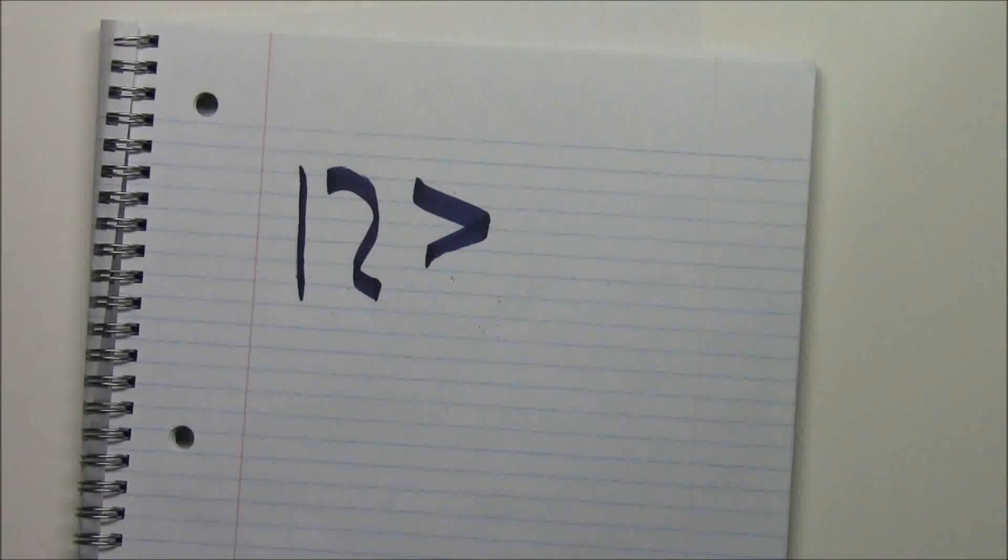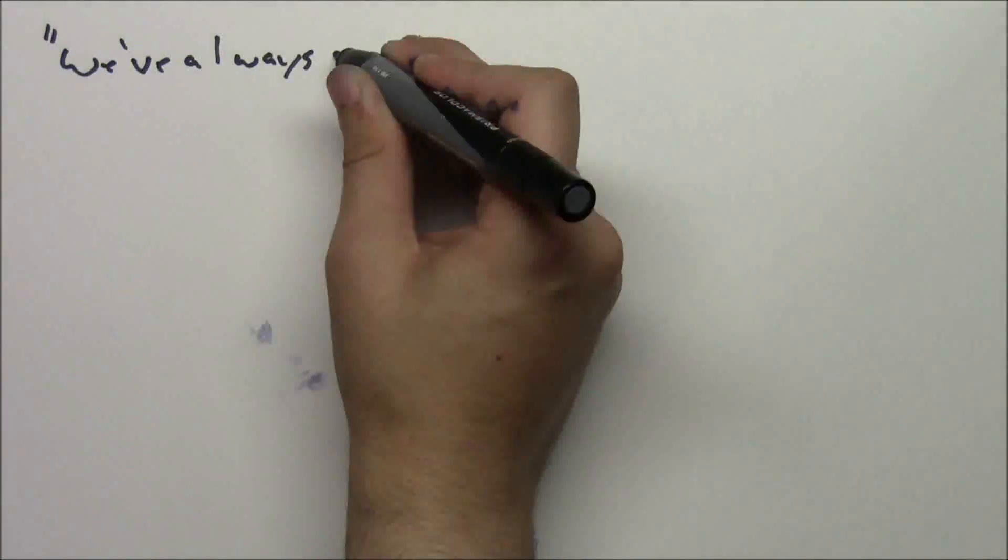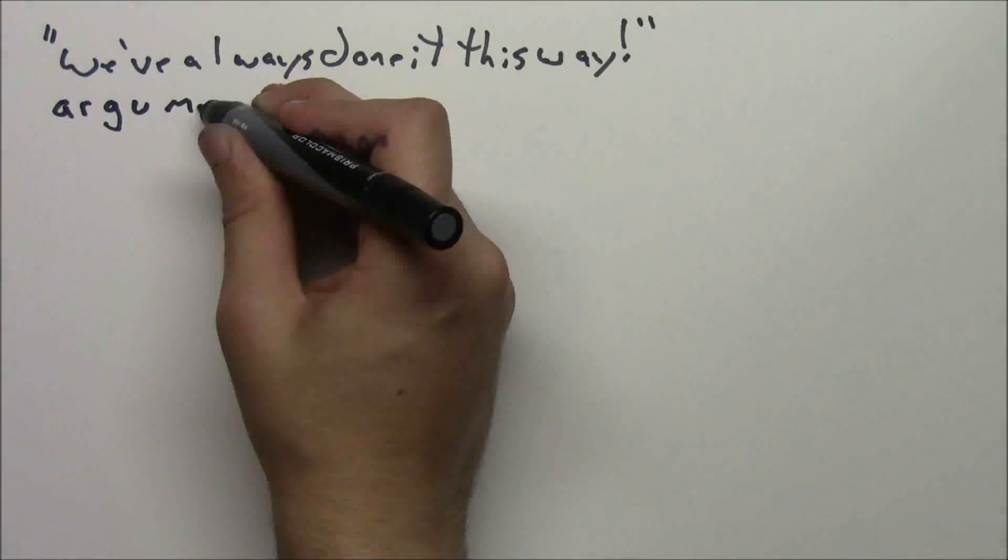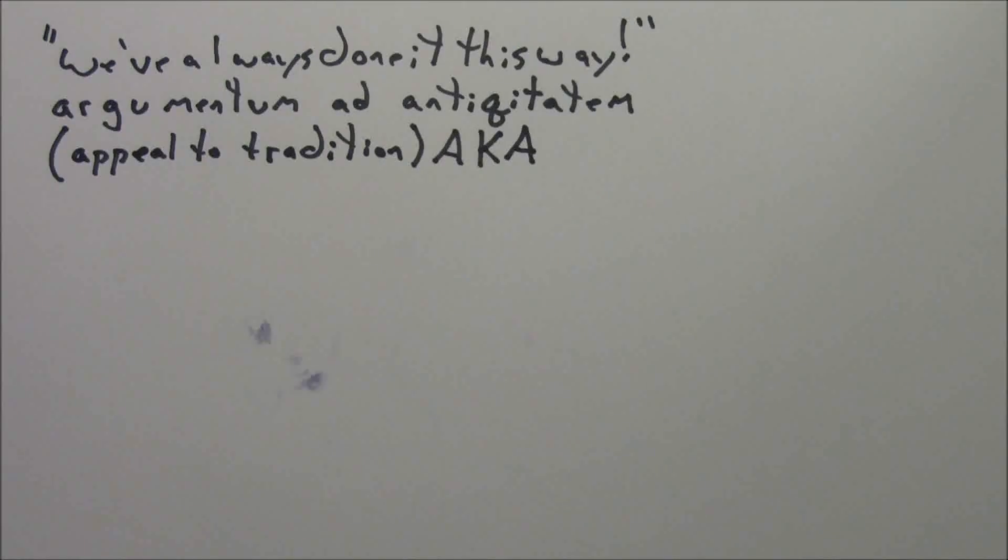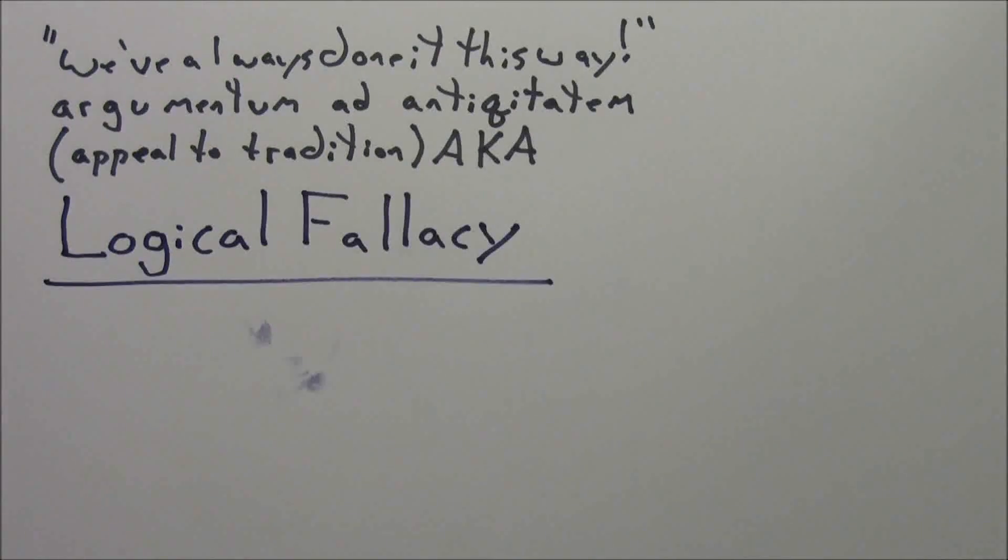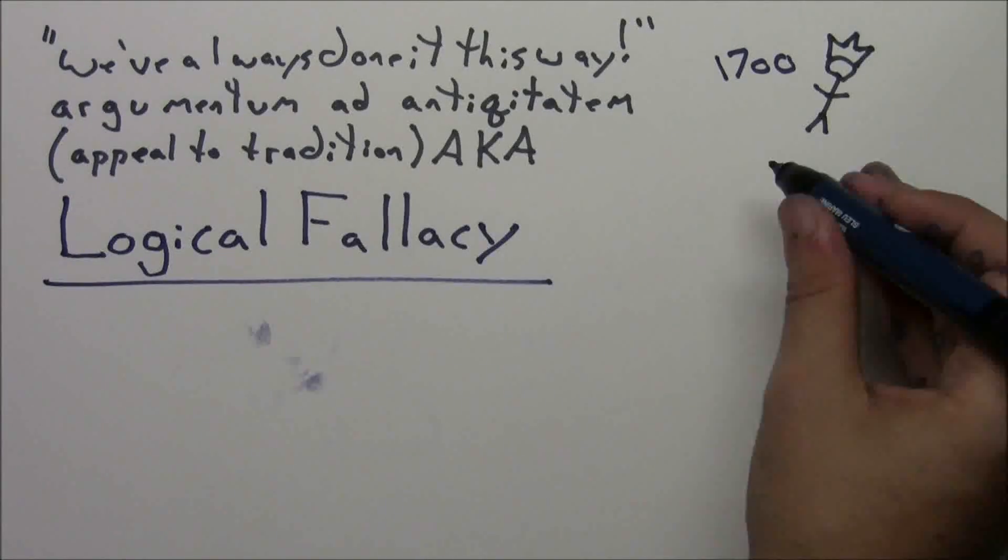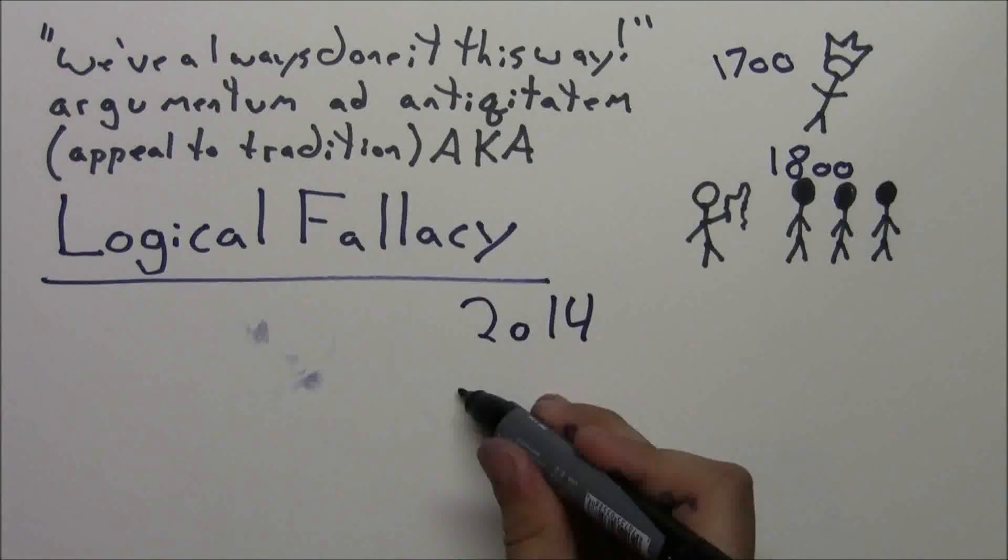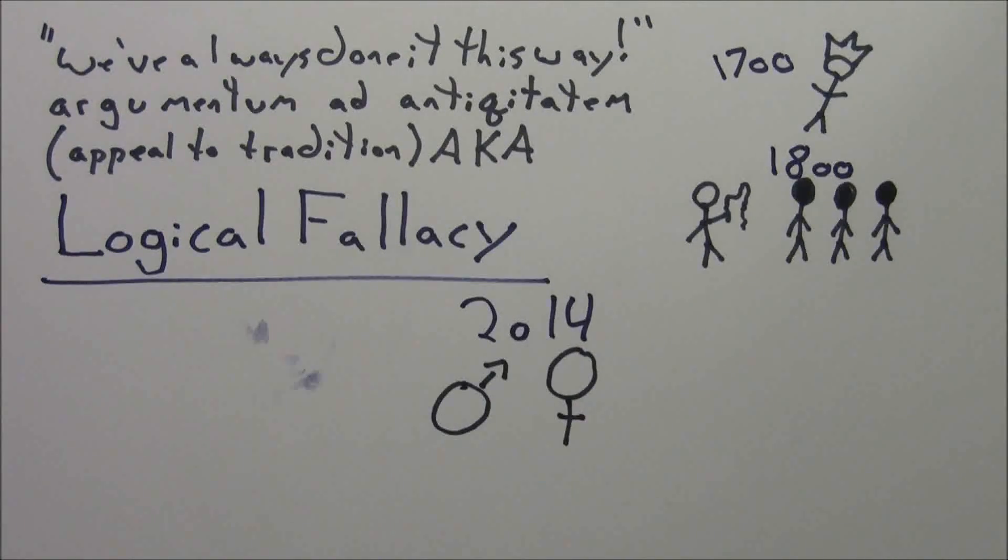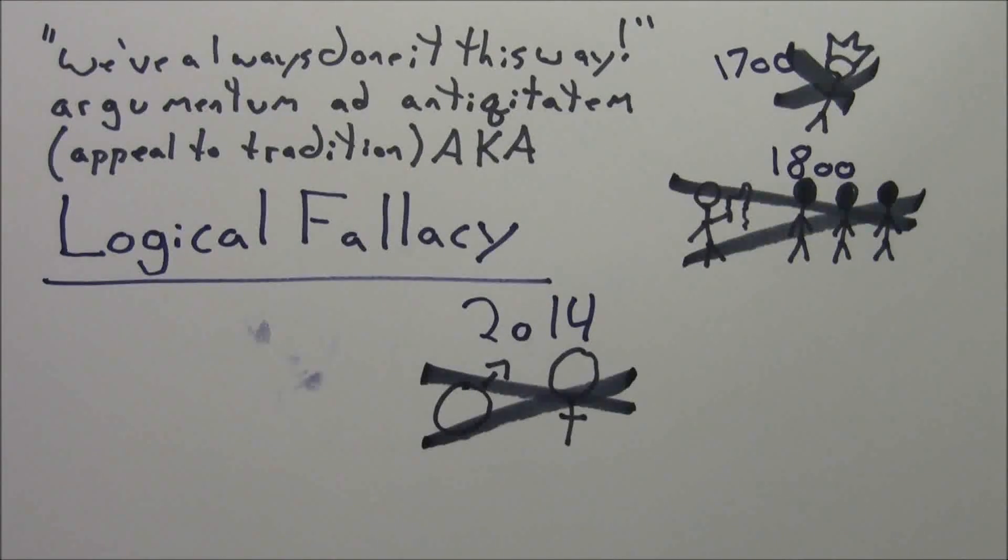Okay, fine. Base 12 is greater than 10 in every way, but why would we switch? It would be such a pain, and I mean, we've always done it this way. Ah, yes, we've always done it this way. Also known as argumentum ad antiquitatum, I think that's how you pronounce it anyways, or appeal to tradition, aka one of the logical fallacies, and also the same argument people in 1700 used, but we've always had kings, or in 1800, but we've always had slaves, or even in 2014, but marriage has always been between only a man and a woman. Isn't it funny how that argument never seems to work out in the long run? I guess that's why it's called a logical fallacy, isn't it?